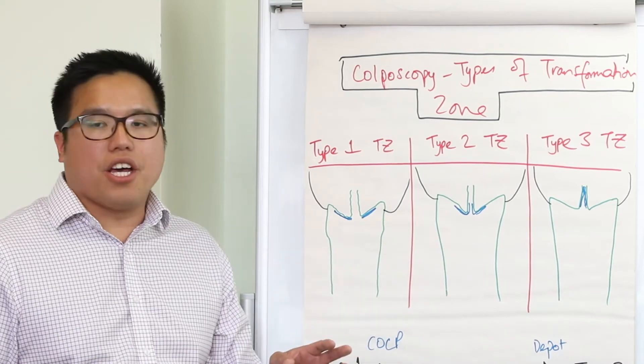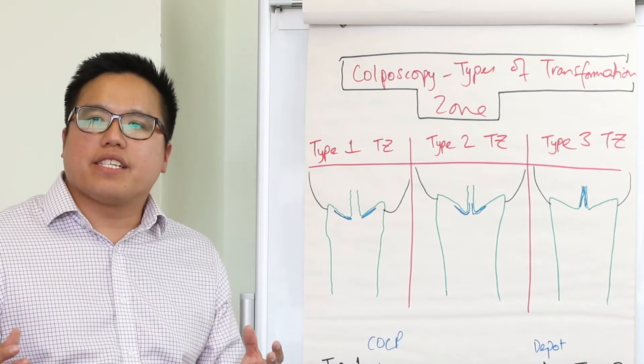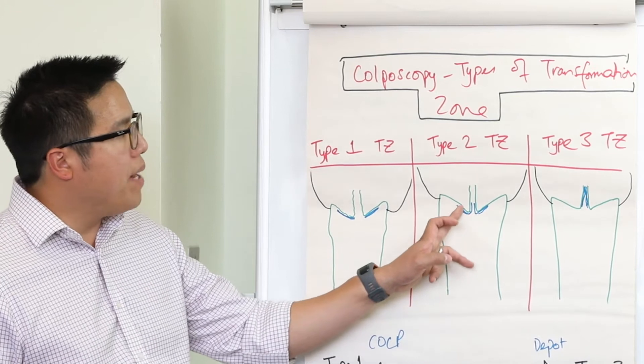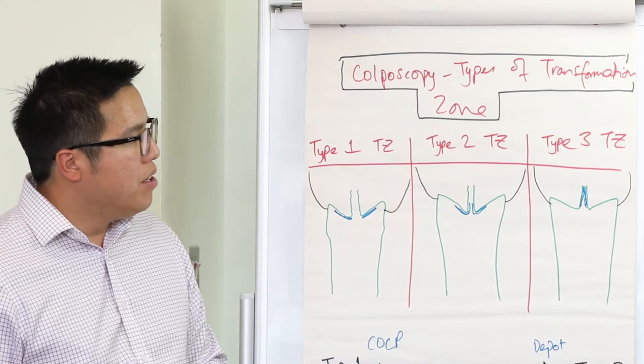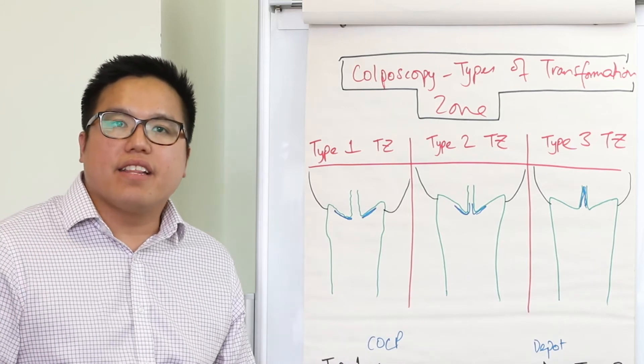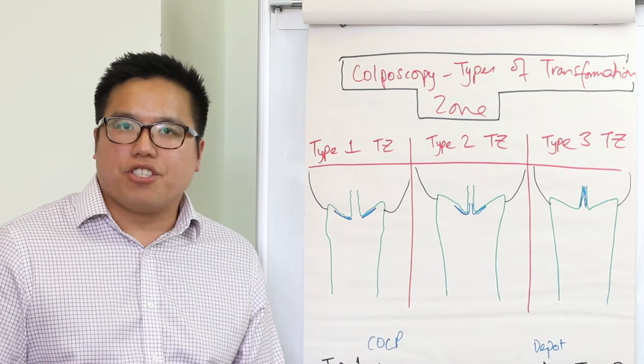A type 2 transformation zone is where partially the transformation zone is on the ectocervix, but it's also on the endocervix, so denoted by the blue pen on this middle panel. So actually the colposcopists can still see the squamous columnar junction but can't see the entirety of the transformation zone.